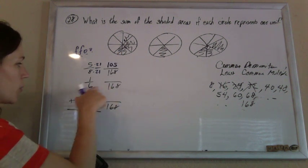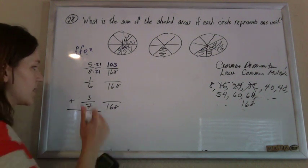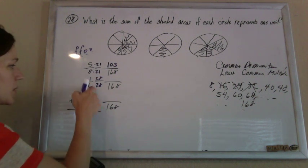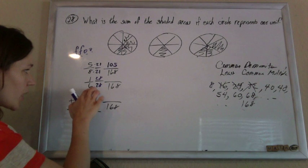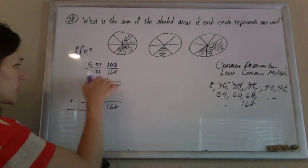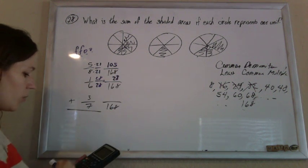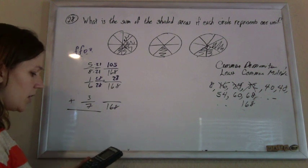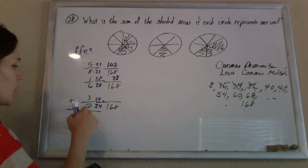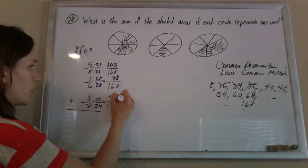Same thing here. What do I multiply 6 by to get 168? 168 divided by 6 is 28. So my fancy form of 1, my fufu here, is going to be 28 over 28. This is going to equal, 6 times 28 is 168, 1 times 28 is 28. Same thing down here. 168 divided by 7 is 24. So my fancy form of 1 is 24 over 24. 3 times 24 on the top is 72.